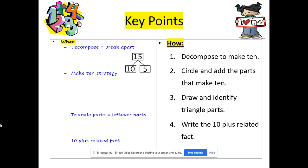How are we going to be successful? One, we're going to decompose to make 10. Two, we're going to circle and add the parts to make 10. Step three, we're going to draw and identify our triangle parts. And then step four, we're just going to write the 10 plus related fact. Are you ready? Make sure you have your whiteboard or a piece of paper to practice the problems. First, we start by parking our marker and our pencil so that we can listen.